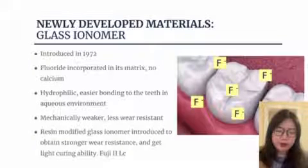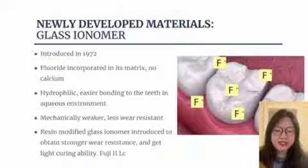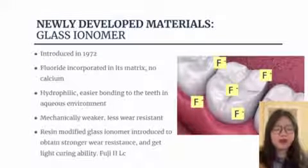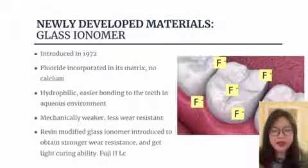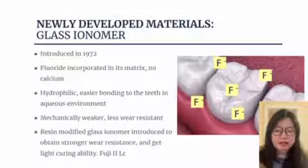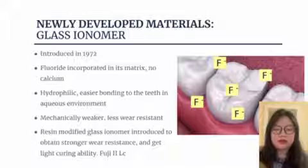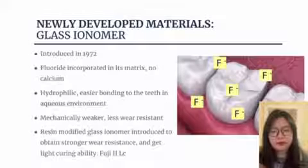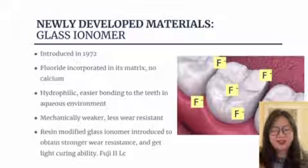To combat this issue, people introduced glass ionomer in 1972, and it has fluoride incorporated into its matrix. However, it has no calcium. This material is really hydrophilic — in our oral environment, we have a lot of saliva, so this allows better bonding to the teeth in such an aqueous environment. However, compared to amalgam and composite, this material is mechanically weaker and less wear resistant.